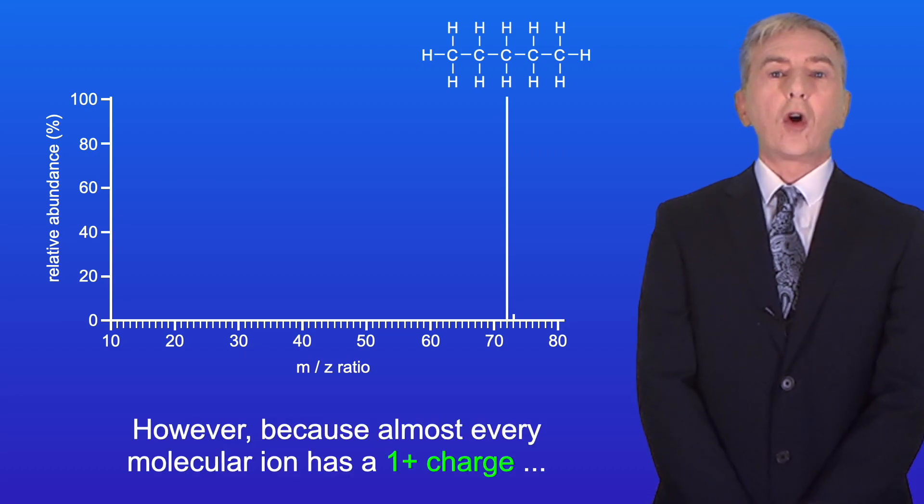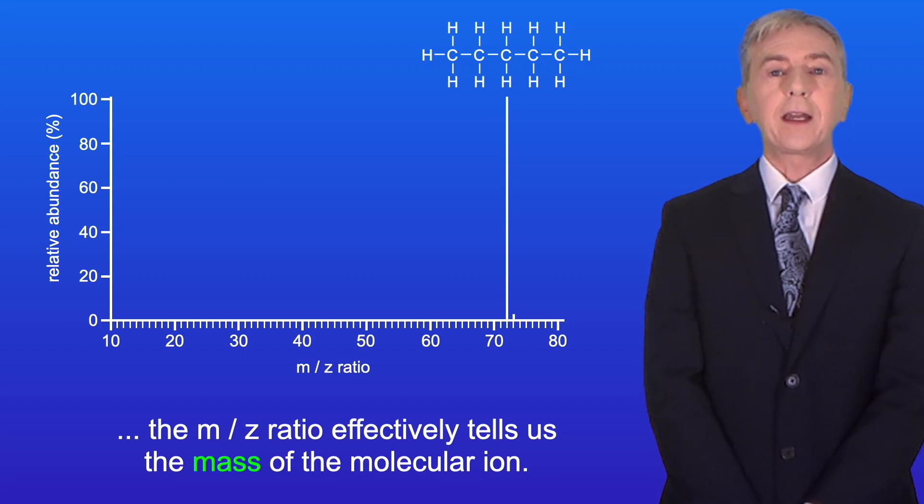Now the m/z ratio tells us the ratio between the mass and the charge of the molecular ion. However because almost every molecular ion has a one positive charge, the m/z ratio effectively tells us the mass of the molecular ion.